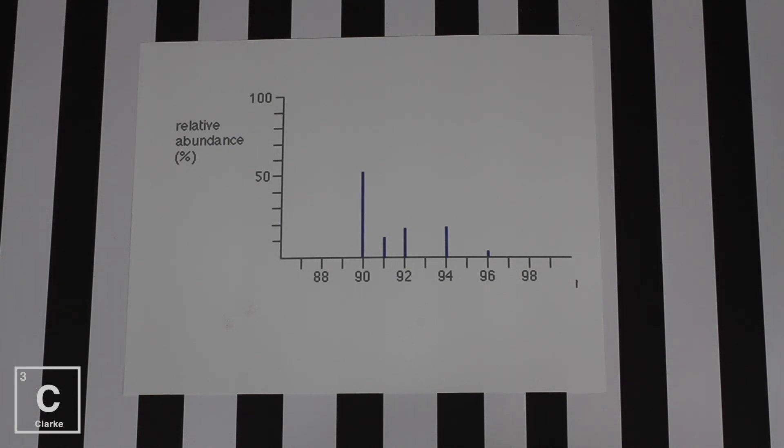So we can see whatever this mystery element is, the isotope that has a mass of 90 has a relative abundance of 50%. The percent for the isotope of 91 is 10%. The isotope for mass number 92, 18%.